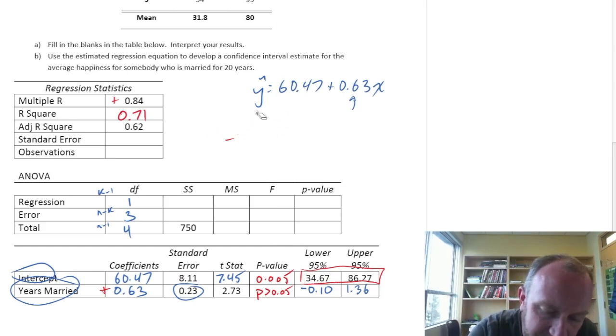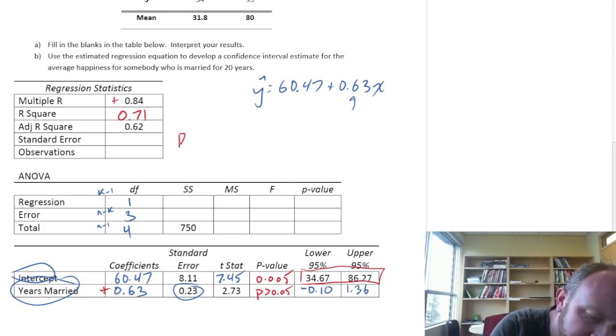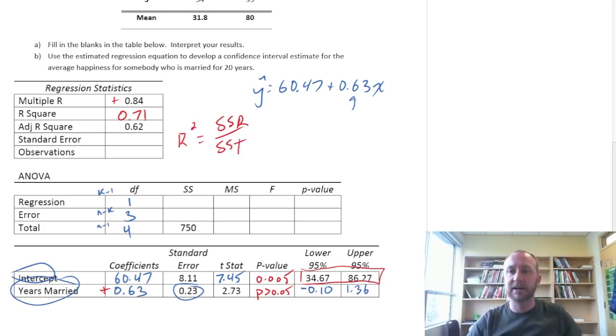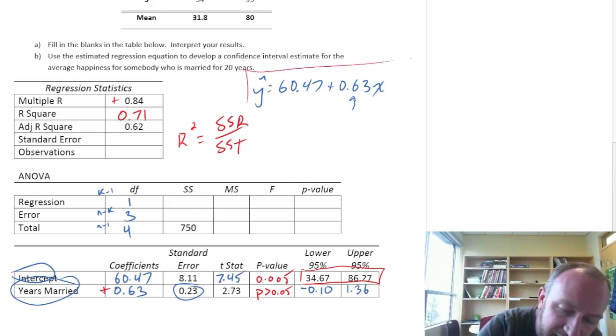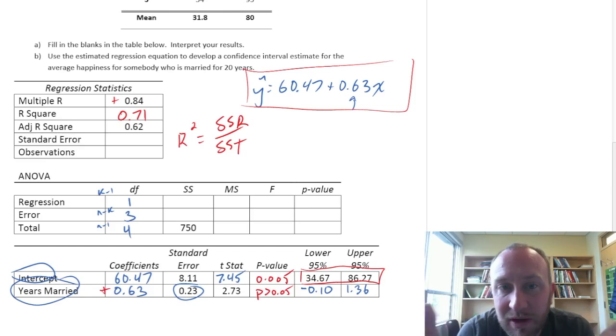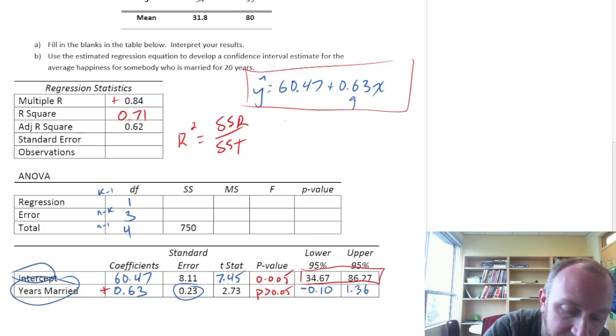So what can we do with that now? Well, the R squared, this is SSR over SST. Now we can start to see how this puzzle is going to come together. Remember that R squared tells us a measure of goodness of fit. So this estimated regression equation captures 71% of the variation in our dependent variable. So the years married explains 71% of the variation in overall happiness. So we can use that information, that 0.71, to calculate the rest of our ANOVA table. Because if this R squared is 0.71, this is equal to SSR divided by SST.